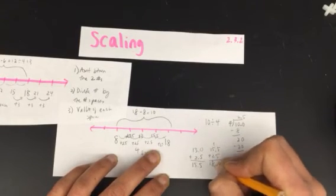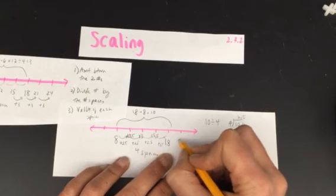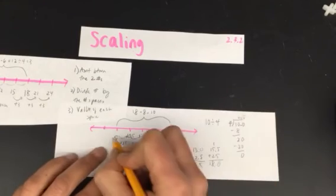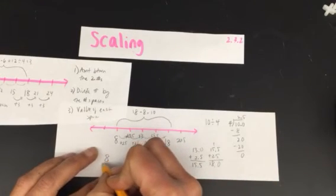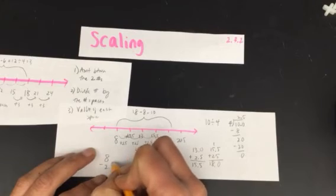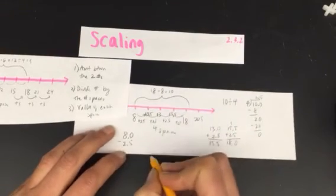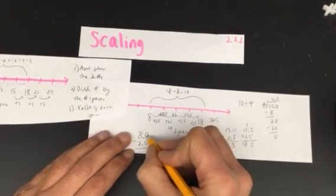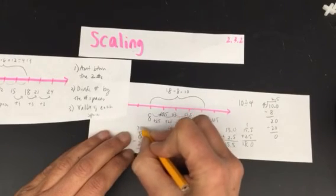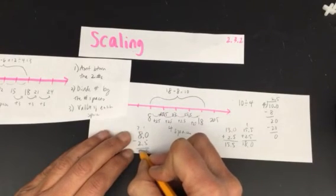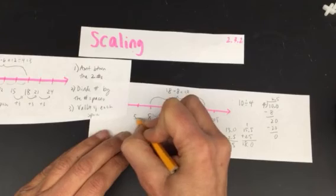And then double checking 15.5 plus 2.5. Okay gives me the 18.0 and then just keep going with that 20.5 and then going backwards 8 minus 2.5. Once again I need to have line up my decimals. Do any borrowing that you need to. So here's 5.5.